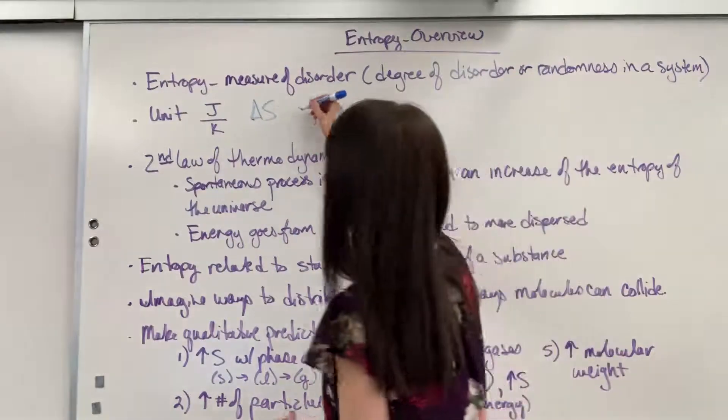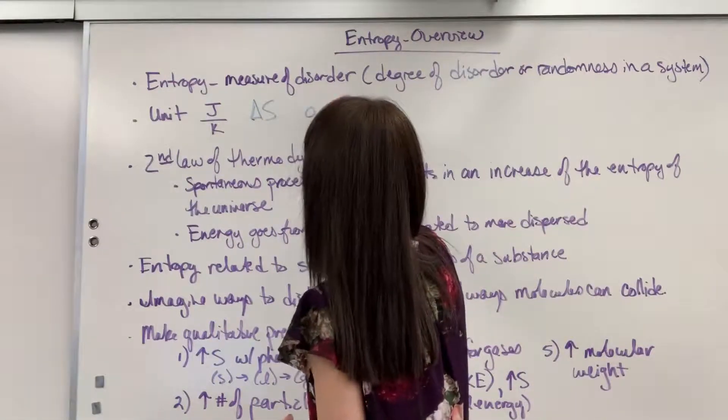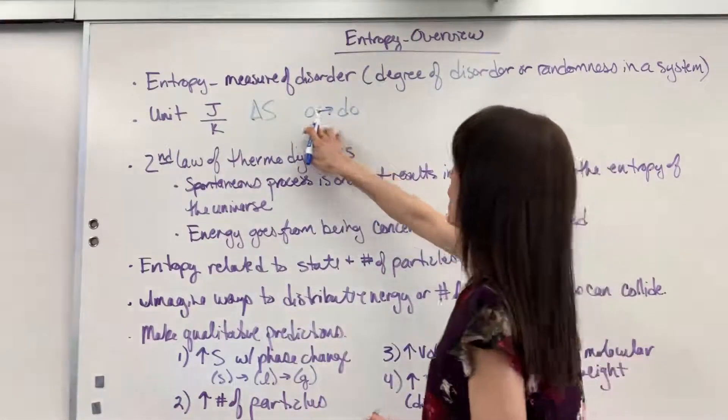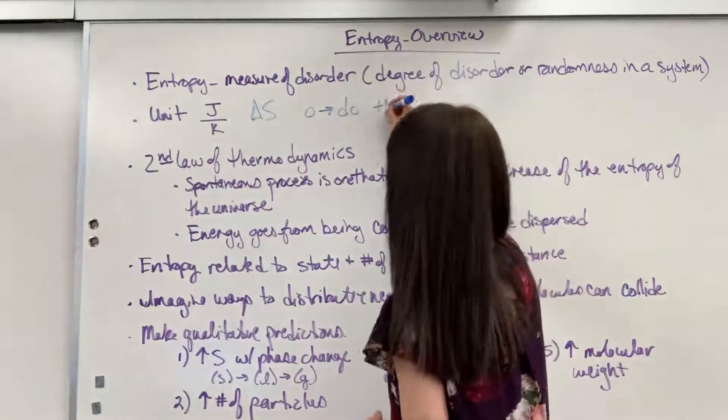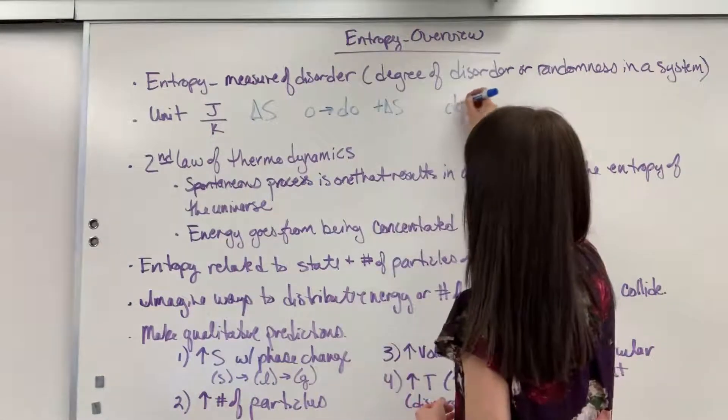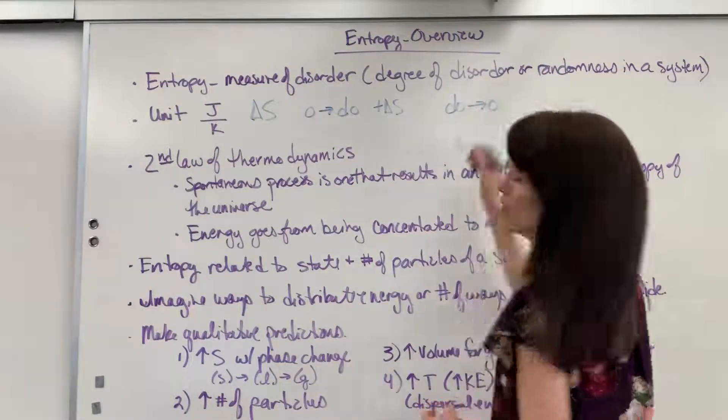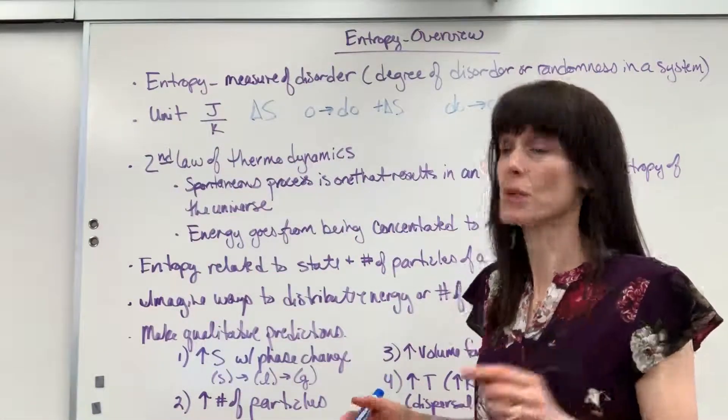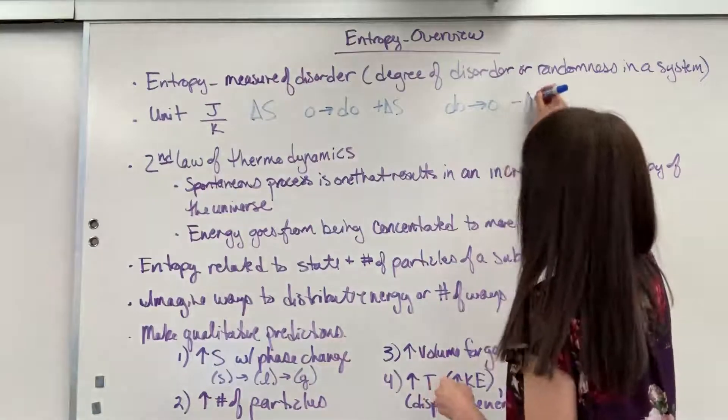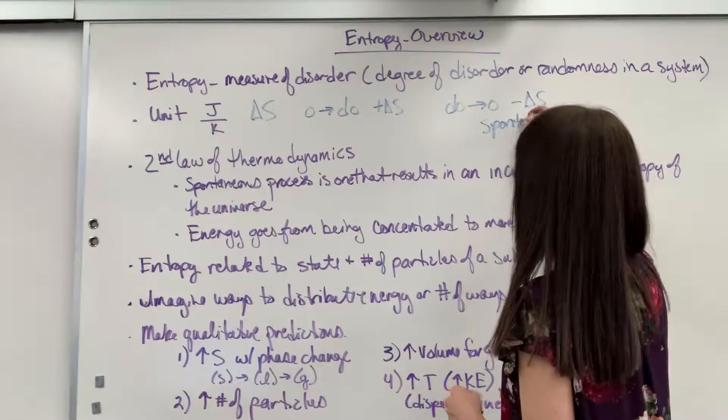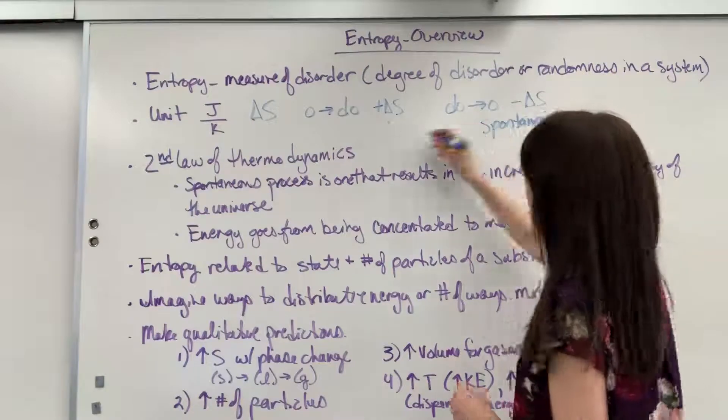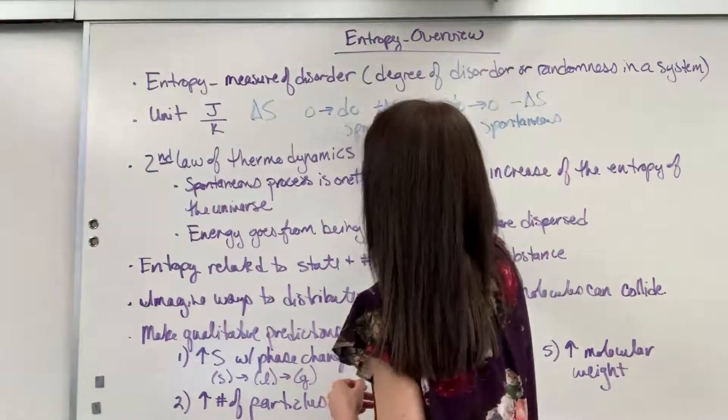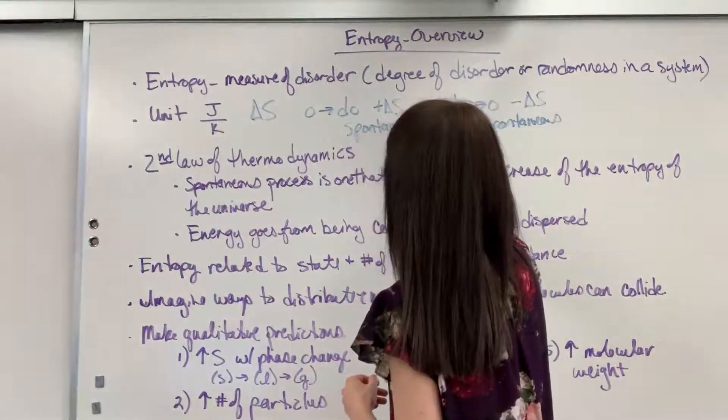A little reminder on this. If we are going from order to disorder, that is going to be spontaneous, and that's a positive delta S. And if you go from disorder to order, if you're making something become more organized, that's going to take energy, that's non-spontaneous, that is a negative delta S. So remember, the positive, going from order to disorder, happens naturally, so that one is spontaneous.